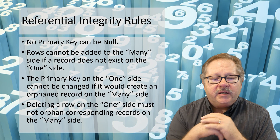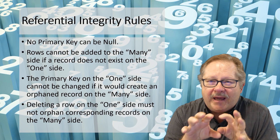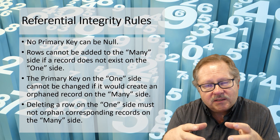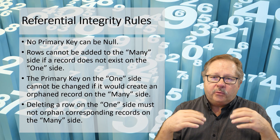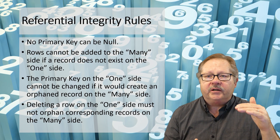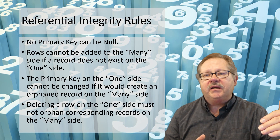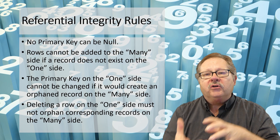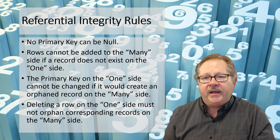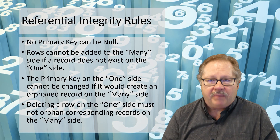The next rule is that deleting a row on the one side means you can't orphan any record on the many side. The record on the one side needs to be deleted along with the records on the many side — the complete set. In other words, if you're deleting an invoice, you delete the header and all the detail at the same time. You don't leave all the detail there with no record to attach it back to.